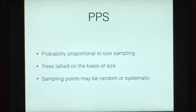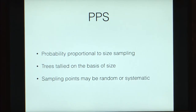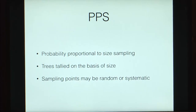Today we have PPS. Point sampling is a way of sampling that goes by the name of probability proportional to size sampling. Essentially, the probability of a tree getting into your sample will depend on the size of the tree. Trees are tallied on the basis of their size.